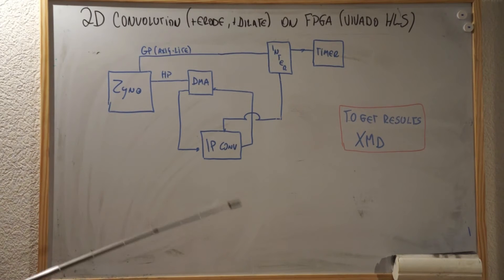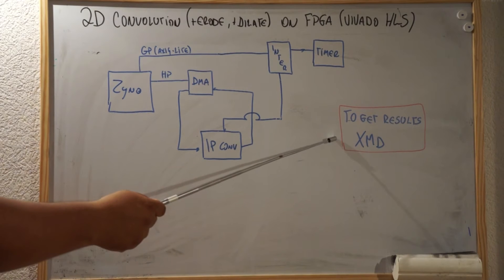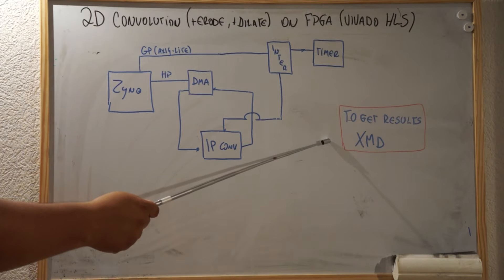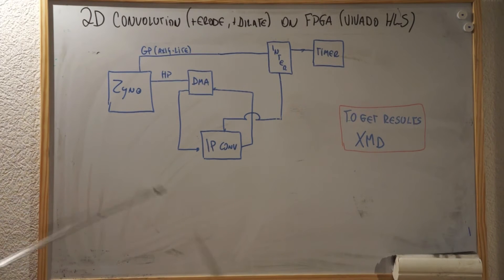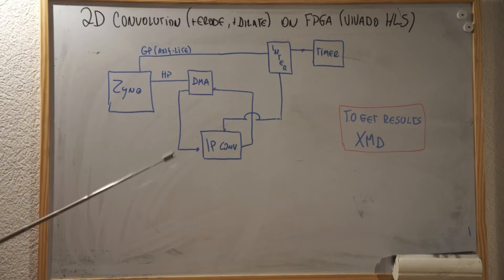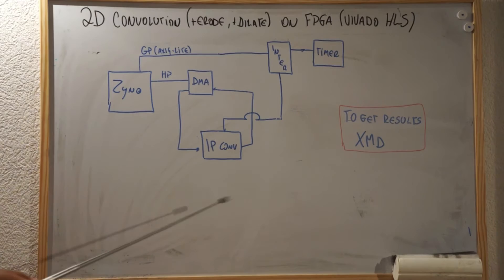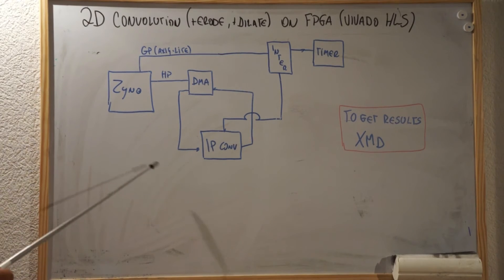To get the results back, we're going to use XMD, which is a debugger that lets you gather resources from memory in the Xilinx SDK. We have some scripts that actually parse the result of XMD and show it as an image in MATLAB.